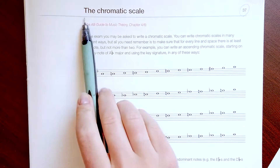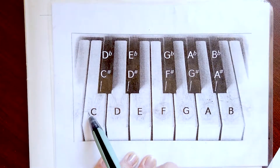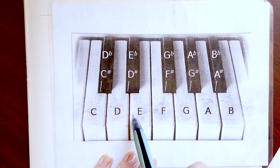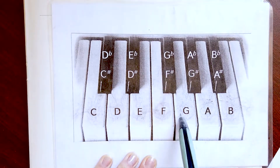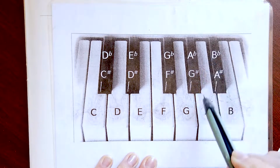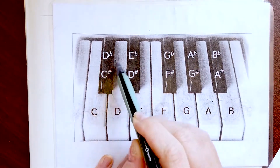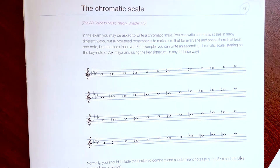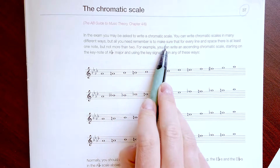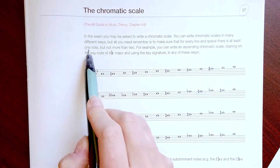Today we will speak about the chromatic scale. We name it the semitone scale. Usually when we go up we raise the notes, and when we go down we follow the flats. We have to remember that always when we write the chromatic scale we have to use each note once or twice, not more.